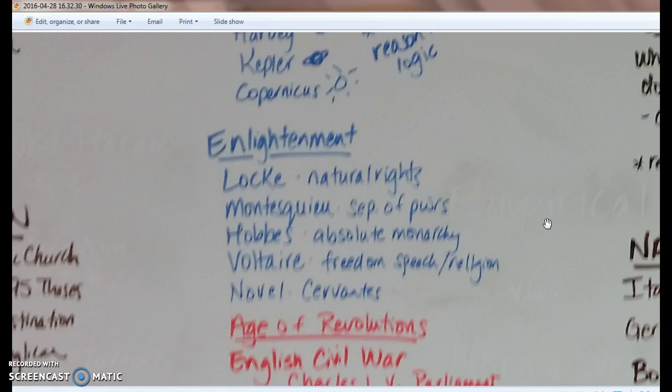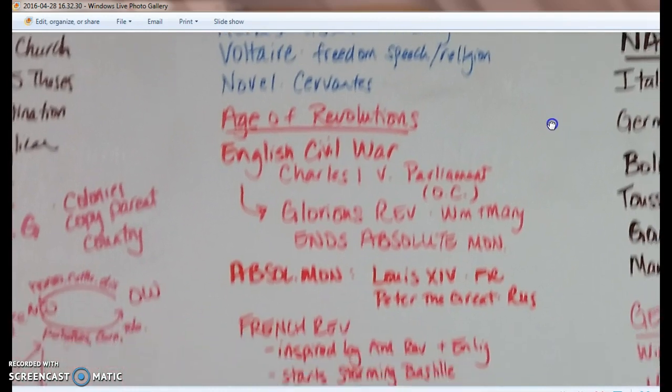Voltaire gives us a voice — freedom of speech and freedom of religion. The novel is very popular during this time period. Cervantes is famous for writing Don Quixote. You might also see that piece of artwork by Eugène Delacroix with the lady leading liberty — her dress is torn and she's carrying the French flag — which leads us to our revolutions.